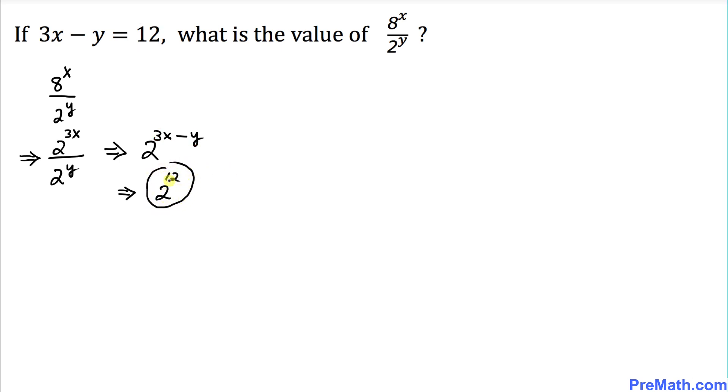If we simplify this one, 2 power 12 means we're going to multiply 2 twelve times, that is going to give us 4096. Thus the value of 8 power x over 2 power y turns out to be 2 power 12, that is in terms of exponential notation, and if you simplify it furthermore, that is going to be 4096, and that is our final answer.